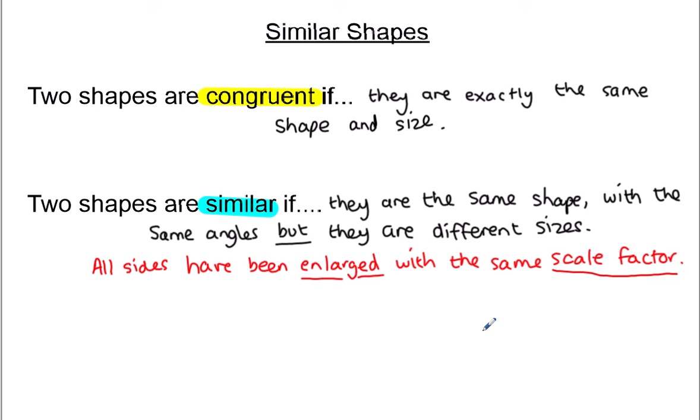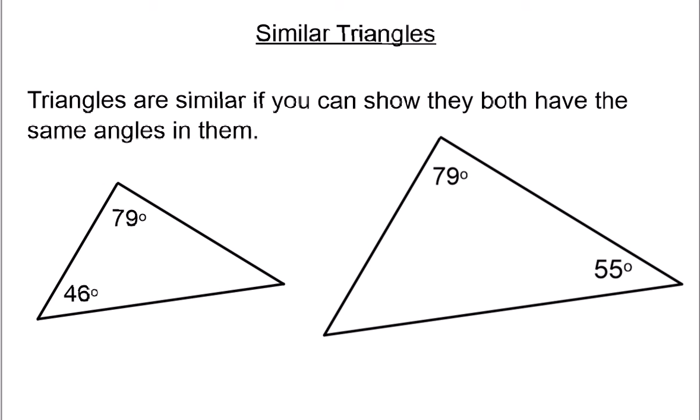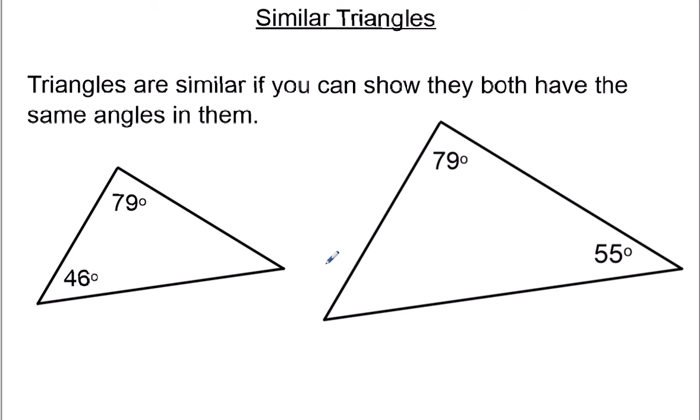So, similar triangles. We're not going to worry too much about congruent, because there are some rules for that I don't want to go into today. One way you can prove they are similar is to prove they've got the same angles. Similar shapes have the same angles, but they could be bigger or smaller than each other. I've got two triangles here — one of them is obviously bigger than the other one. If I can prove they've got all the same angles, I can prove they're similar.